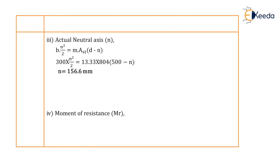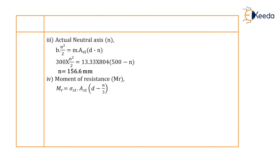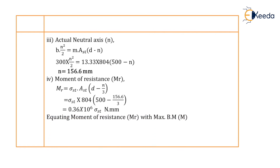Now the next step is to find out the stresses developed in steel. For that, we find the moment of resistance using the formula: MR is equal to Sigma ST into AST into (d minus N by 3). Putting Sigma ST as unknown and calculating the other values, we get MR equal to 0.36 into 10 to the power 6 into Sigma ST Newton mm. Equating MR with the maximum bending moment of 50 into 10 to the power 6 Newton mm, we get Sigma ST equal to 138.87 Newton per mm square.